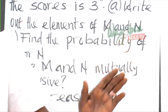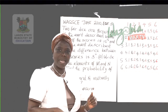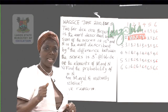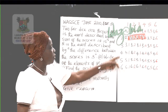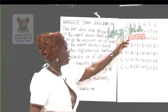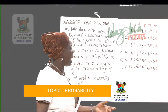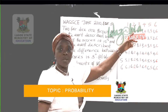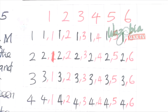Let us assume we have two dice — a black die and a red die, each numbered 1 to 6. When we throw, we can have combinations like 1-1, or the black showing 6 and the red showing 3. This gives us our sample space.